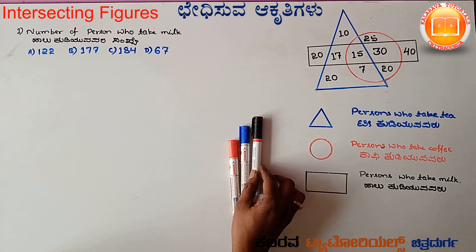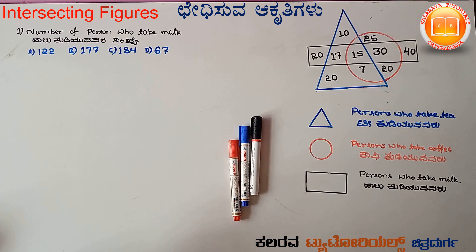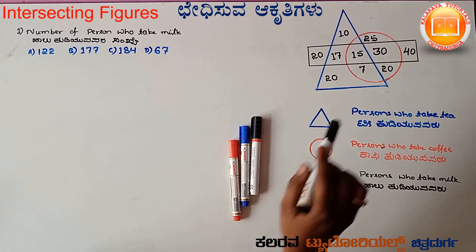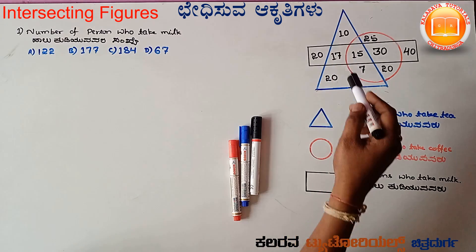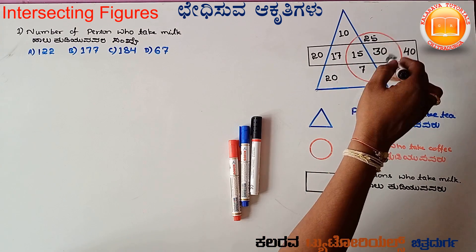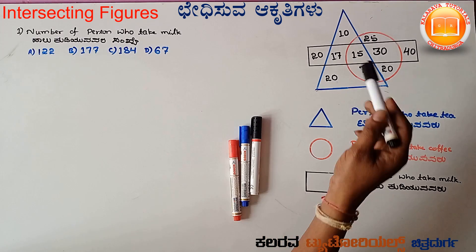Now they are given the first question. Before going to the first question, I have taken here some diagrams. In this diagram, there are three types: one is a circle, one is a triangle, and one is a rectangle.